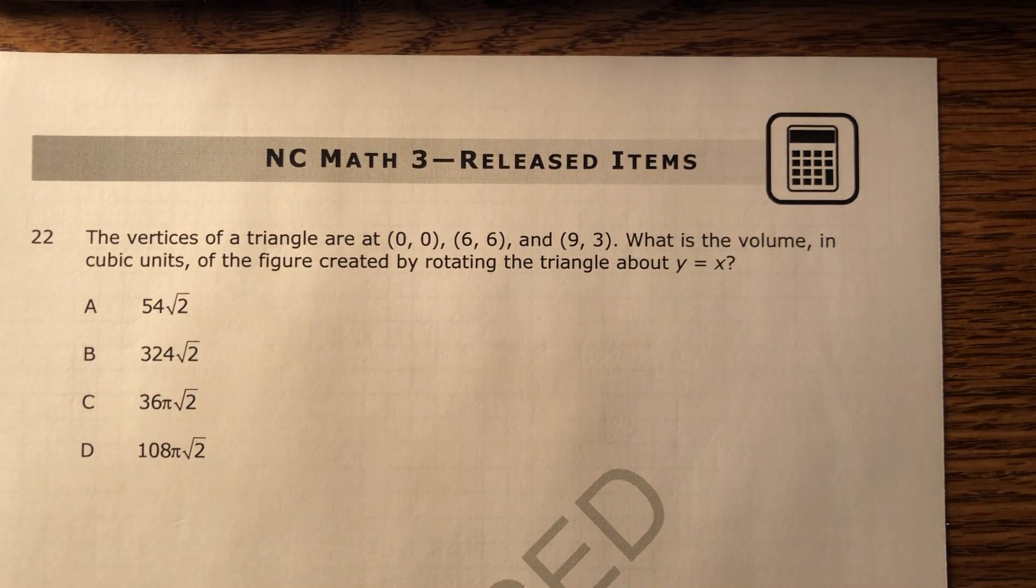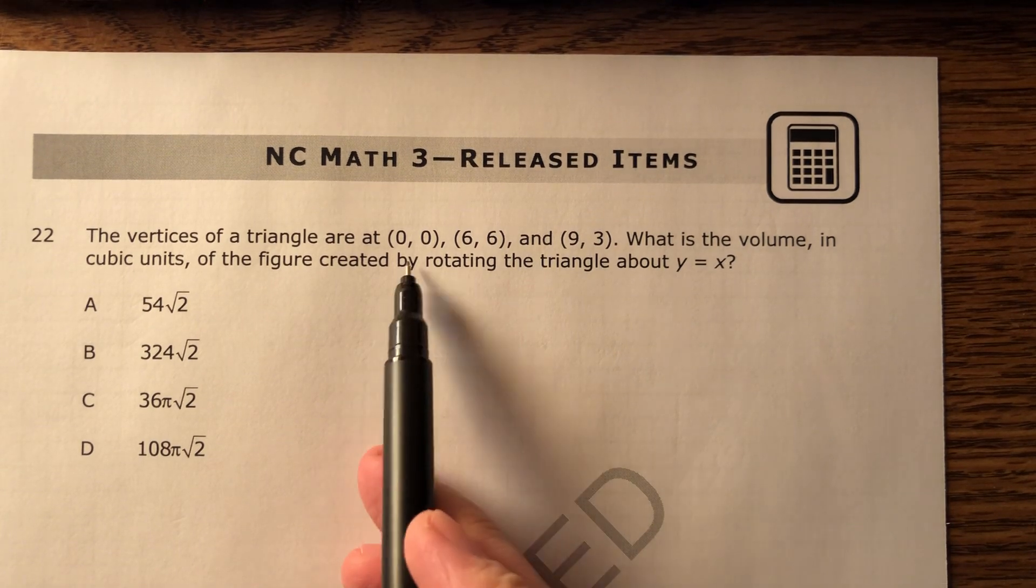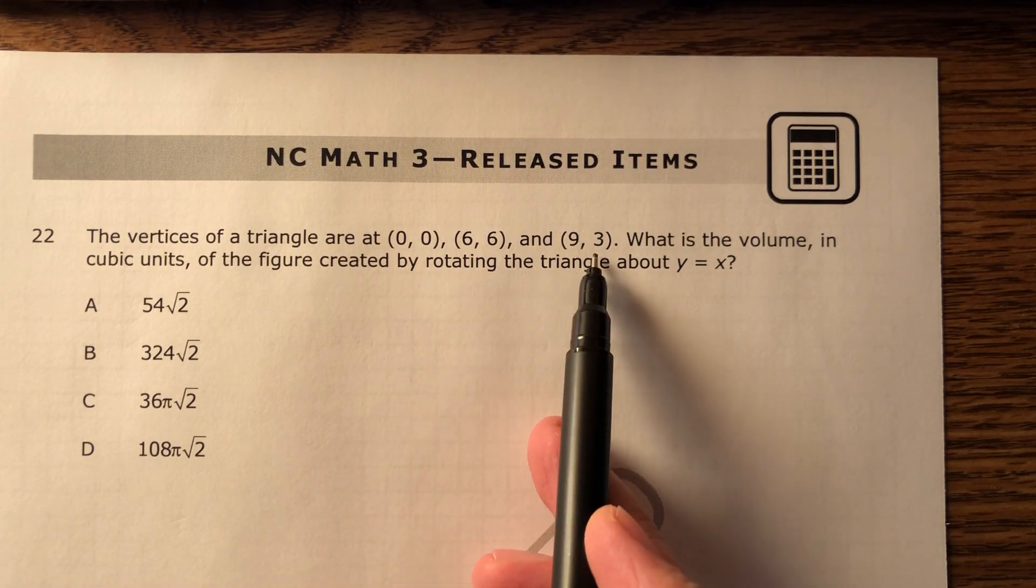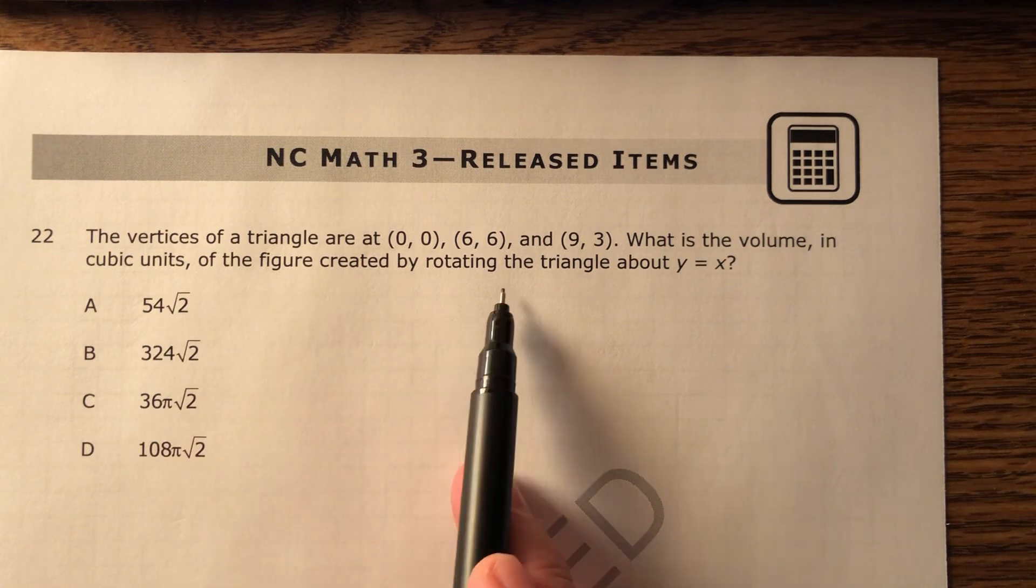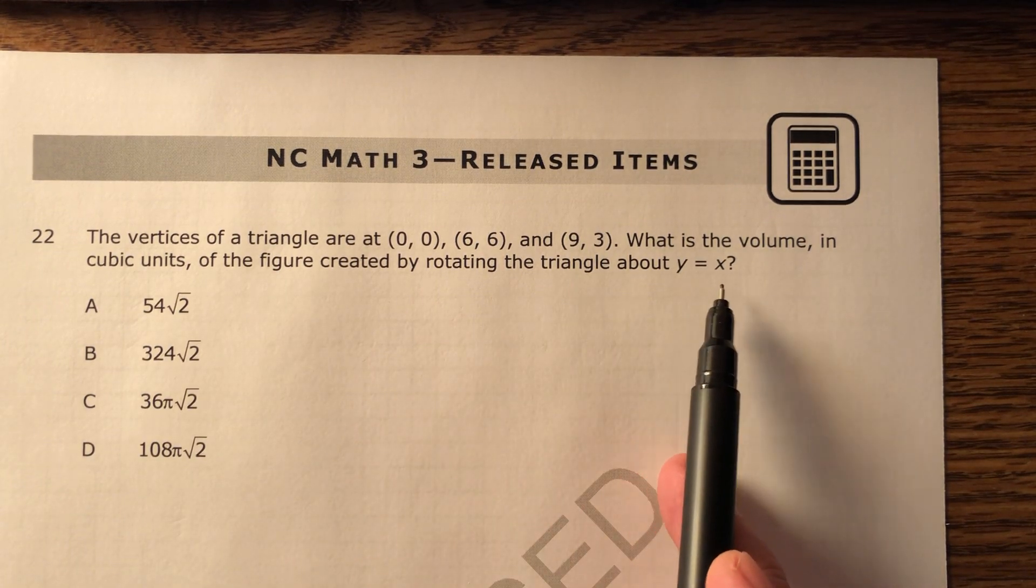One of the most evil problems I've ever seen on a released exam is this one right here. The vertices of a triangle are at (0,0), (6,6), and (9,3). What is the volume in cubic units of the figure created by rotating the triangle about line y equals x?